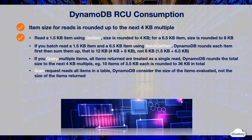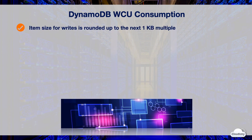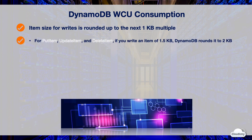If you read an item that doesn't exist, DynamoDB still consumes RCUs — a strongly consistent read consumes one RCU, and an eventually consistent read consumes half an RCU. Item size for write requests is rounded up to the next 1 KB multiple. For example, if you write an item of 1.5 KB with PutItem, UpdateItem, or DeleteItem operations, DynamoDB rounds up the item size to 2 KB.